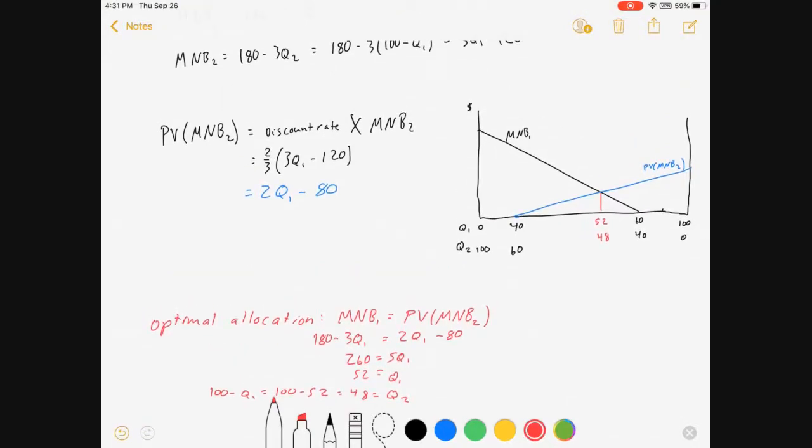So let's figure out total net benefits here. Let's see if we can show why this is optimal. If we are to measure total net benefits, it's going to be area under the marginal net benefits curve. For period 1 I'll mark it in blue. It's going to look something like this. And for period 2, which I'll mark in yellow, it's going to look something like this.